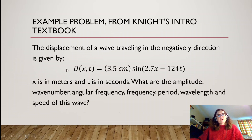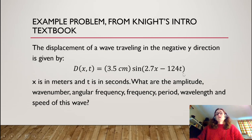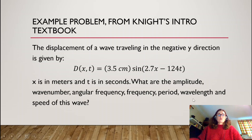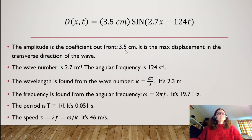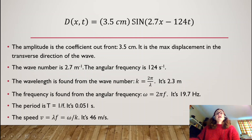Let me do one example problem before finishing this review. From Knight's introductory textbook: the displacement of a wave traveling in the negative y direction is given by d(x,t) = 3.5 cm · sin(2.7x − 124t), where x is in meters and t is in seconds. The question asks for the amplitude, wave number, angular frequency, frequency, period, wavelength, and speed. The amplitude is the coefficient multiplying the sine function out front — that's 3.5 centimeters — which is the maximum displacement in the transverse direction.